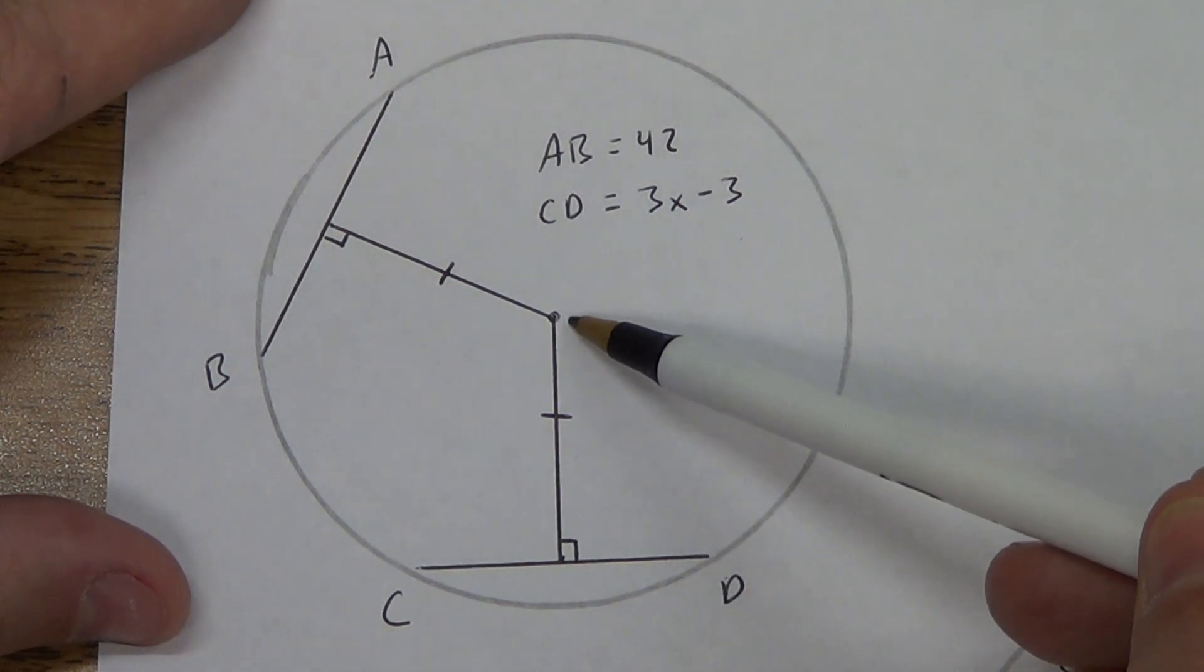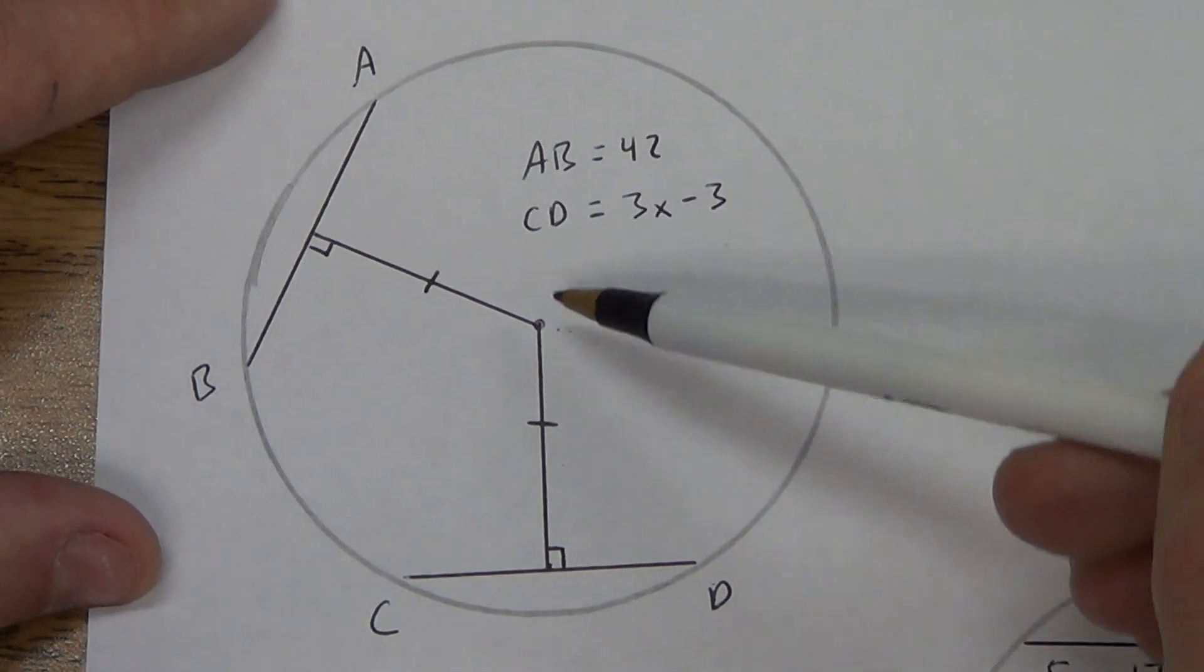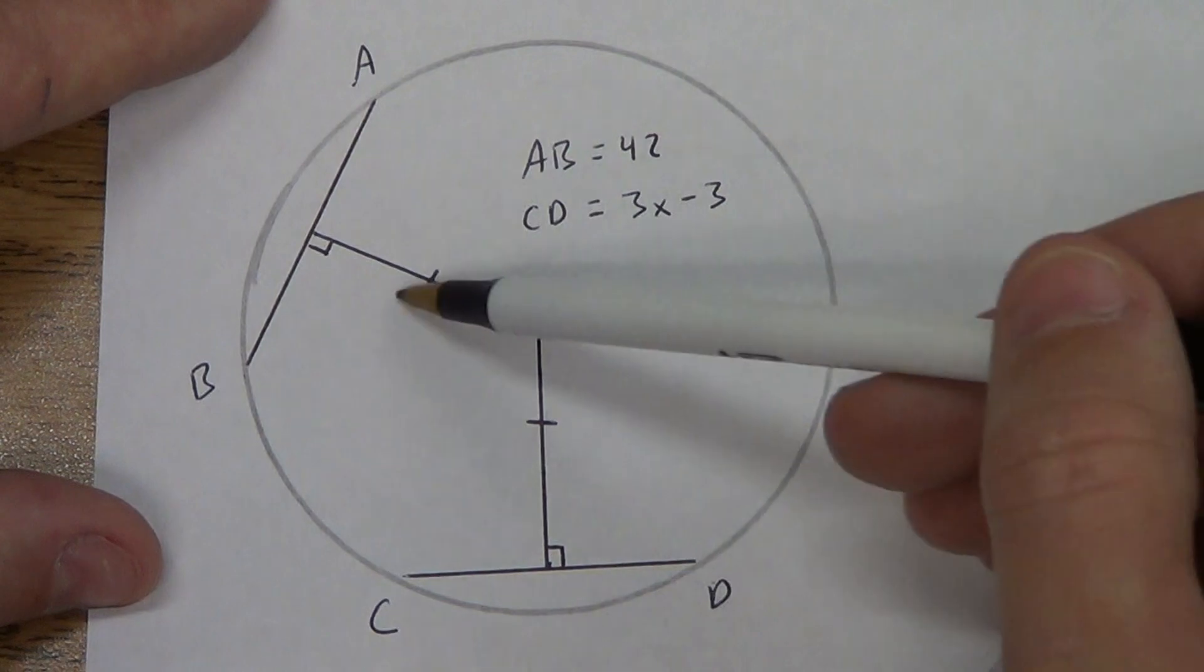There will not be just some random dot any time. If there's a dot there, it's there for a reason. It's the center of our circle. So we've got perpendicular distances that are equal.